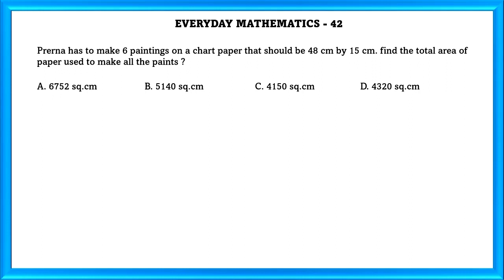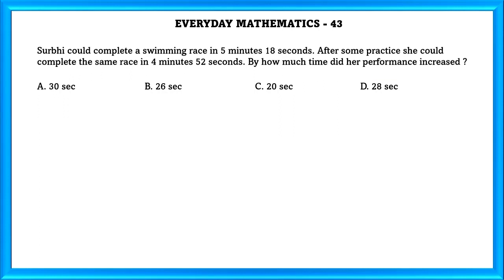Everyday Mathematics Question Number 42: Prerna has to make 6 paintings on a chart paper that should be 48 cm by 15 cm. Find the total area of paper used to make all the paints. The area of one painting equals L times B, that is 48 times 15. Area of 6 paintings equals 48 times 15 times 6 which equals 4,320 square centimeters. That is option D.